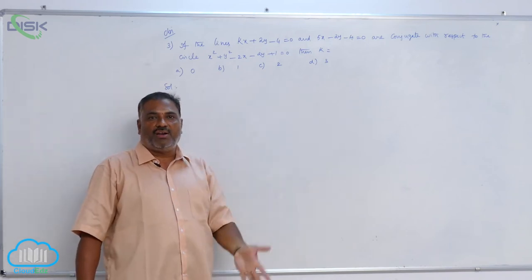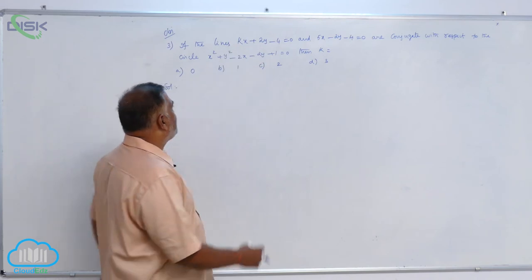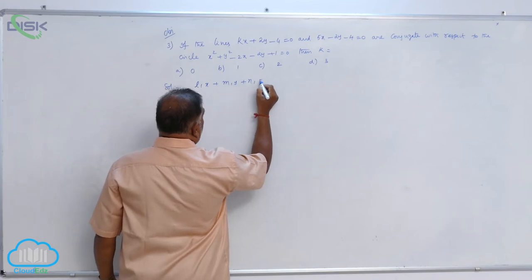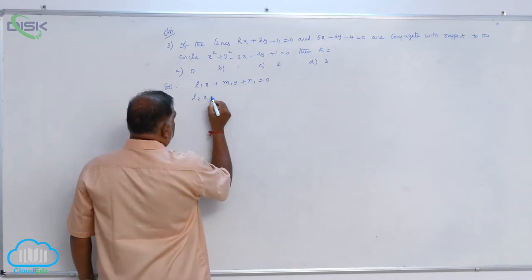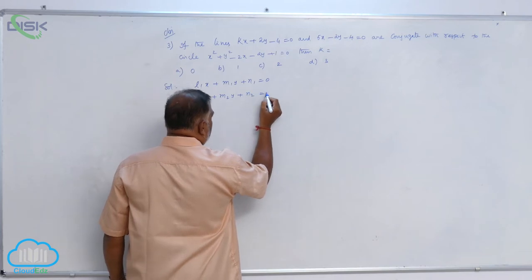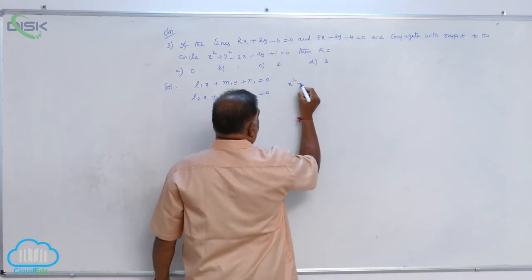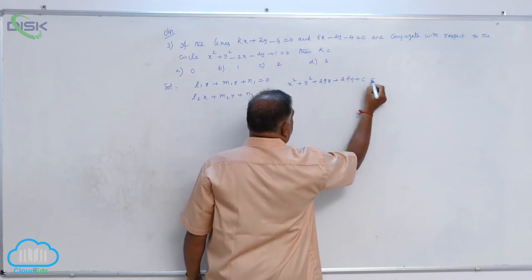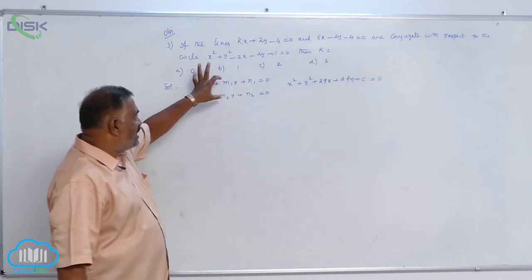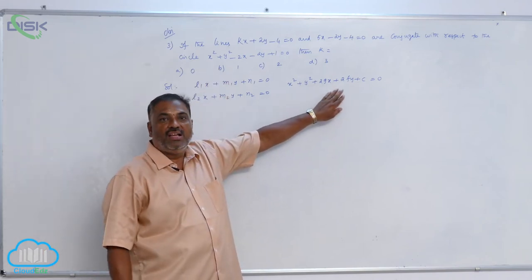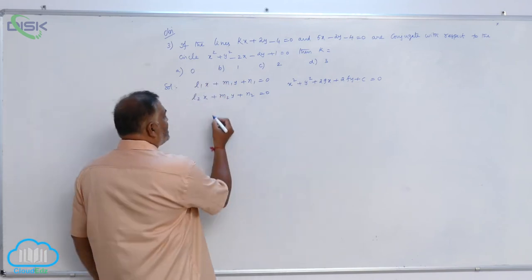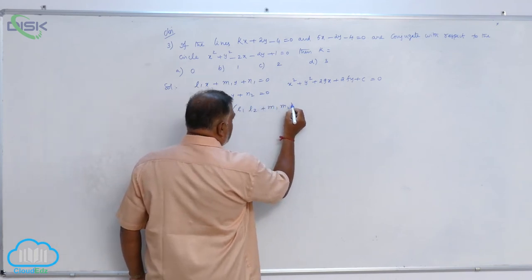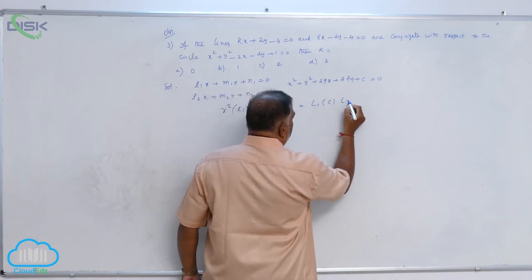There is a shortcut formula for solving this problem. Now, l1x plus m1y plus n1 equals 0, l2x plus m2y plus n2 equals 0, circle equation is x square plus y square plus 2gx plus 2fy plus c equals 0. These two lines are conjugate with respect to this circle if and only if it satisfies the condition: r square into l1l2 plus m1m2 equals l1c into l2c.